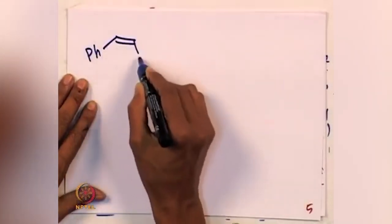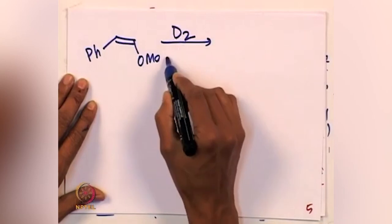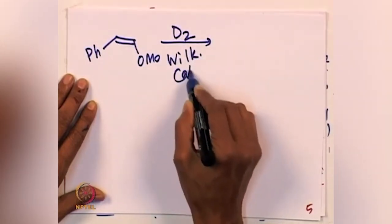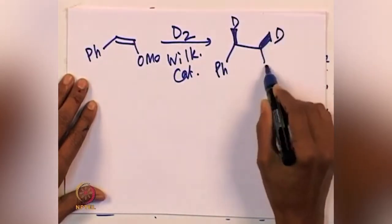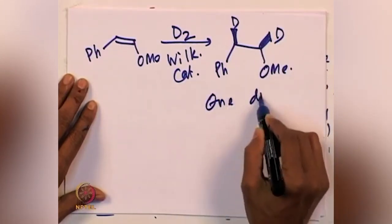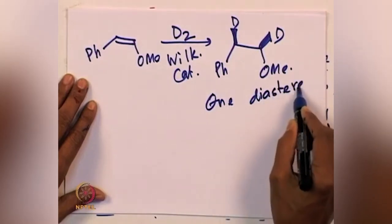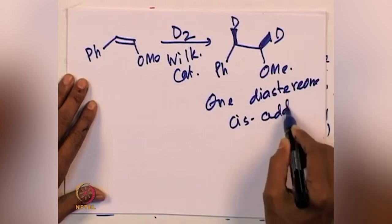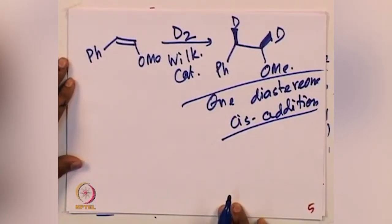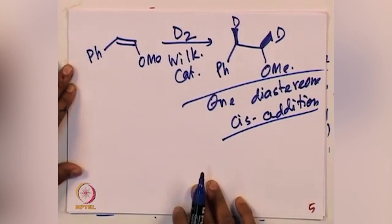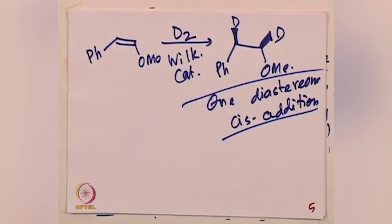Now we will look at the stereochemistry of these reactions. If you take a specific olefin example and react it with D2 in the presence of Wilkinson catalyst, what you get is a cis isomer — only one diastereomer is forming. This clearly demonstrates that cis addition is occurring. We will subsequently discuss other catalysts like the Schrock-Osborn catalyst and Crabtree's catalyst.